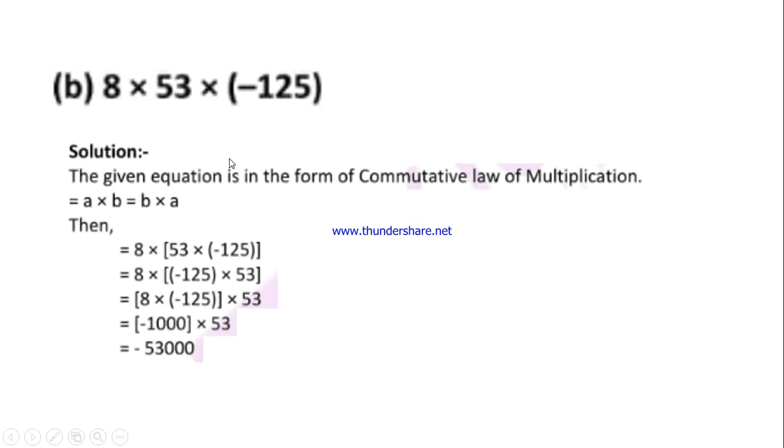So here we are applying commutative property. Then we are bringing -125 to the second position. Commutative means we change the position of the number. So here: 8 × (-125) × 53.